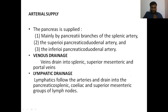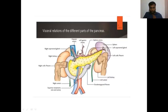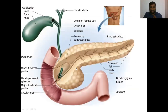The venous drainage is mainly through the splenic vein, the superior mesenteric vein, and the portal vein. The splenic vein lies posterior to the pancreas and runs towards the right side, where it joins with the superior mesenteric vein to form the portal vein - that is the posterior relation of the neck. So venous drainage is into these three veins: the splenic vein, superior mesenteric vein, and portal vein.